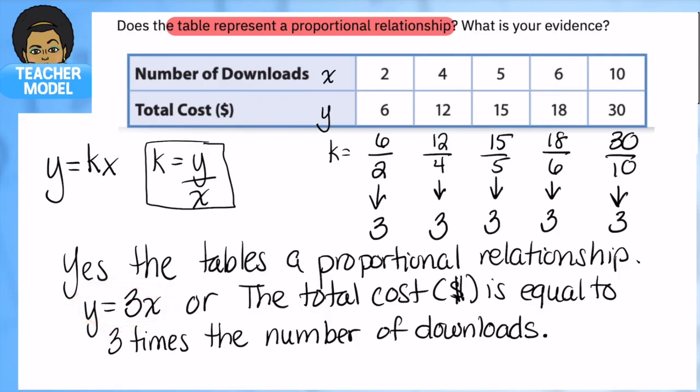One download would just be three dollars, same as our k. This is what we're going to do anytime we need to provide evidence on a table. We're going to use y and x and you're going to divide y divided by x. If you do not remember that, just remember y equals kx and how do you get the k by itself? You divide both sides by x. So that's another way of remembering it.